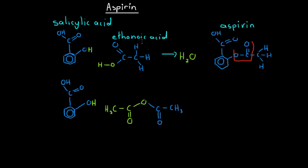We react salicylic acid with ethanoic acid to produce water and aspirin. However, the problem is that because we are dealing with an ester linkage, ester linkages are very vulnerable to hydrolysis. If we react any molecule containing an ester linkage with water, the water molecule can break down the ester linkage. So if we react aspirin with water, this ester linkage will break down and we will produce salicylic acid and ethanoic acid. This means that while trying to produce aspirin, the water being produced reacts with the aspirin, driving the reaction backwards, giving a very low yield and a very slow rate of reaction.